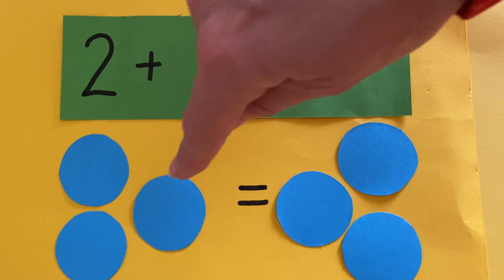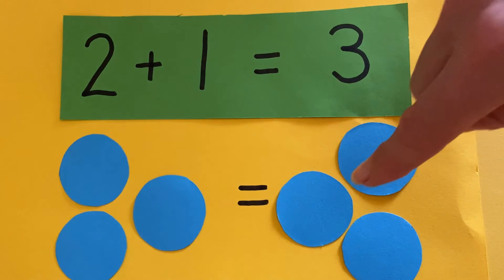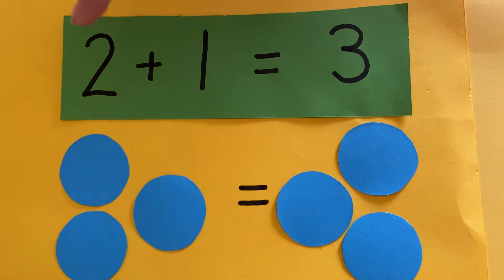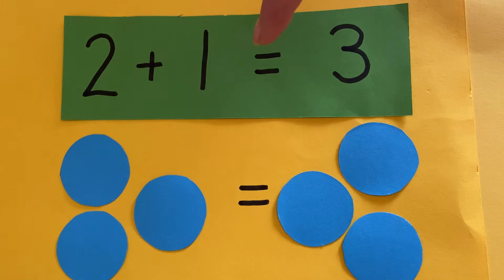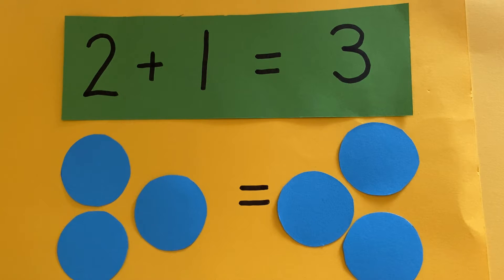Three is the same as three. So two add one equals three. Two add one is the same as three. I can use this way to solve number sentences that have got missing numbers.